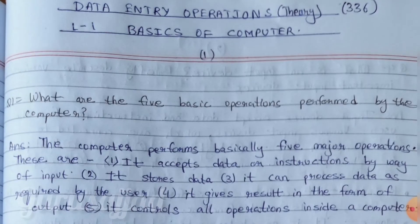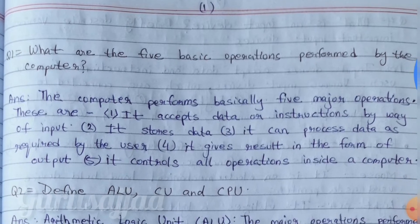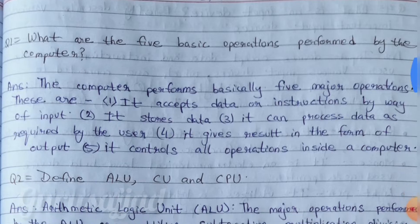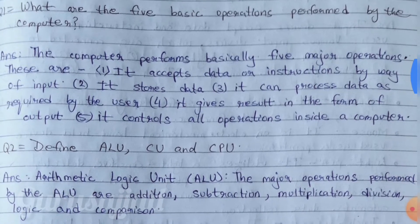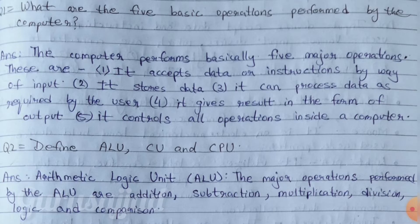So let's move on to the questions. Question no. 1: What are the 5 basic operations performed by the computer? Answer: The computer performs basically 5 major operations. Number 1, it accepts data or instructions by way of input. Number 2, it stores data. Number 3, it can process data as required by the user. Number 4, it gives result in the form of output. Number 5, it controls all operations inside a computer.